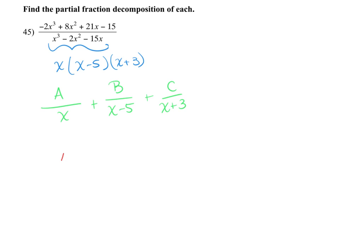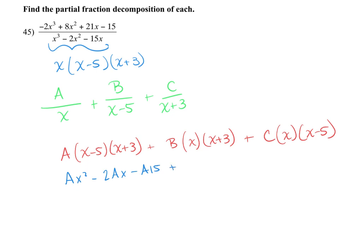So the goal here is to multiply by what you're missing. So my a is going to multiply by x minus 5 and x plus 3. My b is going to multiply by x and x plus 3. And my c is going to multiply by x and x minus 5. Okay, just what are they missing is what you're trying to do here. Here, so I have a x squared minus 2 a x minus 15 a. Yep. Here I have b x squared plus 3 b x. And here I have c x squared minus 5 c x.